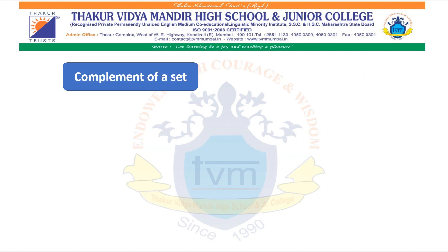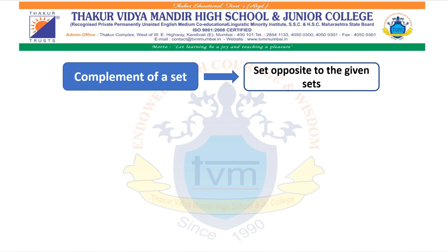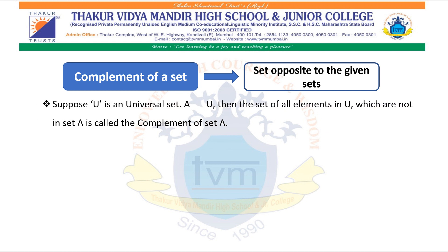Let us see the Complement of a Set. What is the complement of a set? The set opposite to the given set is known as the complement of the set. Suppose U is a universal set and A is a subset of U, then the set of all elements in U which are not in set A is called the complement of set A. It is denoted by A' or A^C.